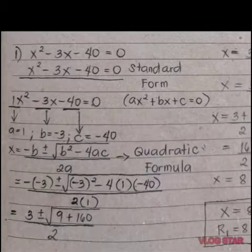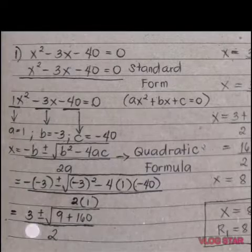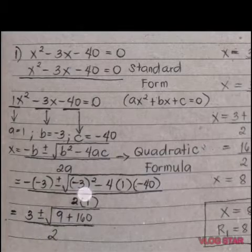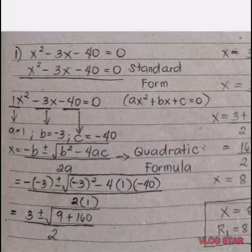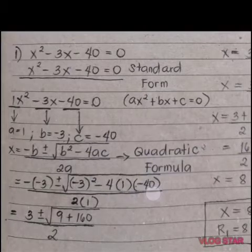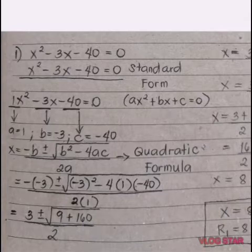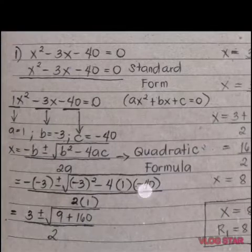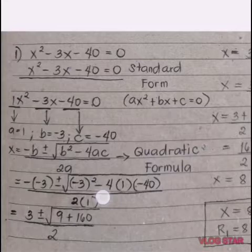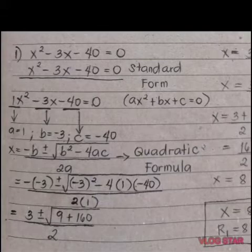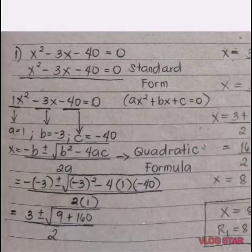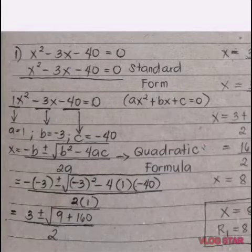Since we have 2 negatives here, it will become positive. So positive 3, and then plus or minus: negative 3 raised to the power of 2 is 9. And then multiply negative 4 times 1 times negative 40; it is positive 160 because we have 2 negatives. Negative times negative is positive. So 9 plus 160 is 169.